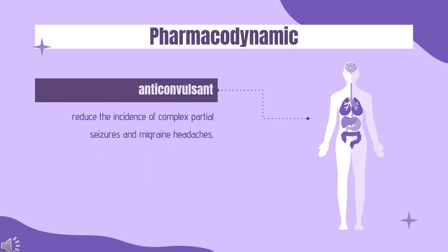Pharmacodynamics: Valproate has been shown to reduce the incidence of complex partial seizures and migraine headaches. It also improves symptom control in bipolar mania. Although the exact mechanisms responsible are unknown, it is thought that valproate produces increased cortical inhibition to contribute to neural synchrony. It is also thought that valproate exerts a neuroprotective effect preventing damage and neural degeneration in epilepsy, migraines, and bipolar disorder.